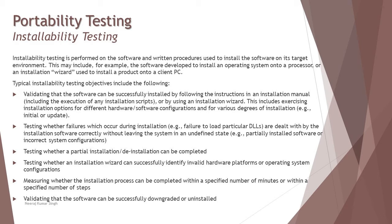Typical installability testing objectives include: validating that the software can be successfully installed by following the instructions in an installation manual; testing whether failures during installation are handled correctly without leaving the system in an undefined state; testing whether a partial installation or de-installation can be completed; testing whether an installation wizard can identify invalid hardware platforms or OS configurations; and measuring whether installation can be completed within a specified number of minutes or steps.